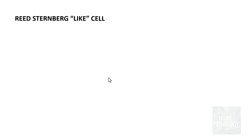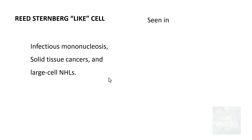Sometimes there are conditions with large cells that look like Reed-Sternberg cells — these are called Reed-Sternberg-like cells, often seen in infectious mononucleosis, some solid tissue cancers, and large cell non-Hodgkin lymphomas. They are not true Reed-Sternberg cells, but they resemble them. Immunophenotyping will help differentiate these from typical Reed-Sternberg cells.